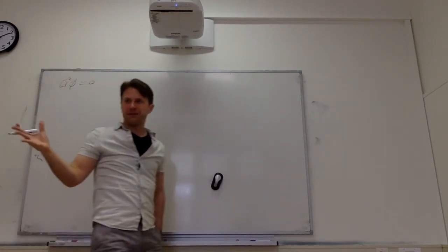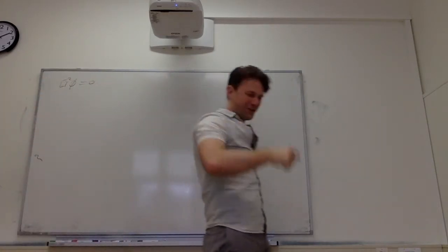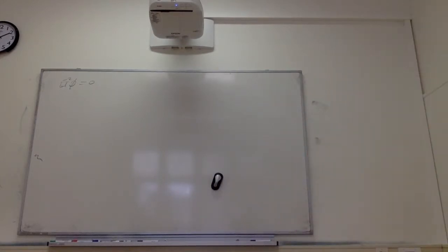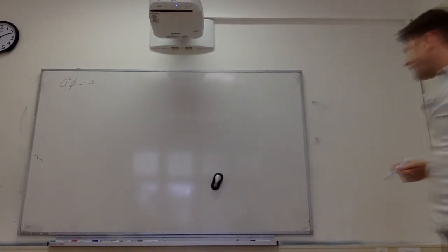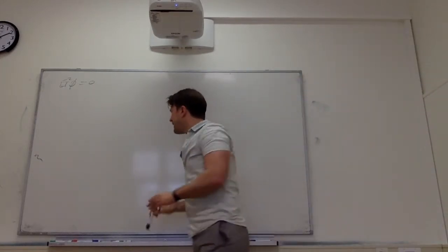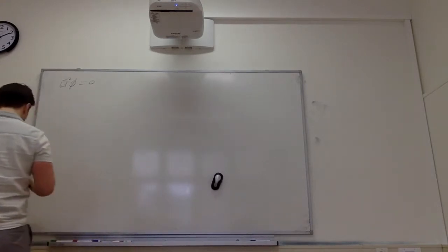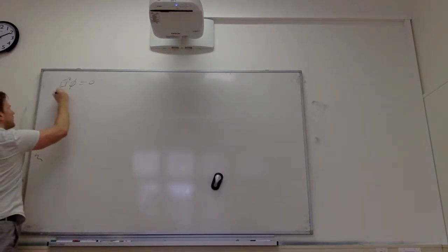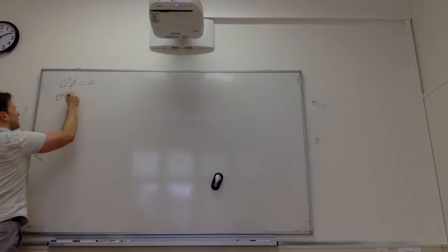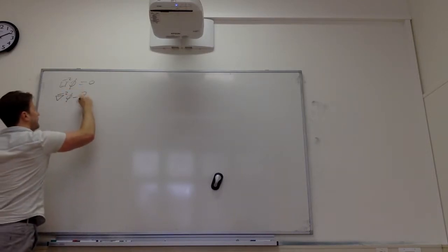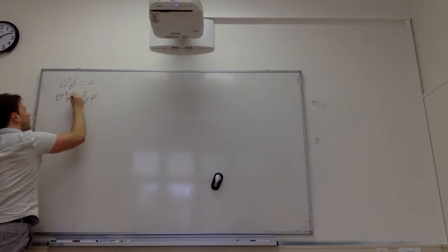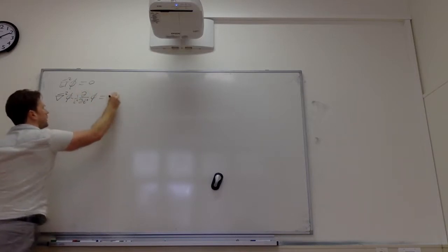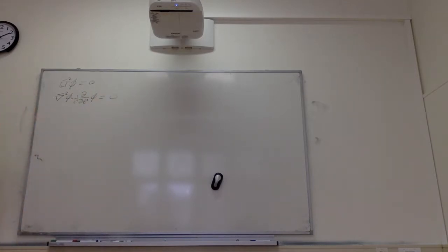This doesn't tell anyone anything — I just changed the notation. The notation means something. It means this: nabla squared minus d²/dt² times one over c squared equals zero. This is a wave equation, but it's a homogeneous one.